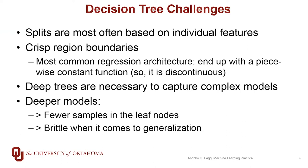If we want to capture very complex models, we need to have a very deep tree. What a deep tree means is that for an individual leaf node, we have very few samples that have fallen down into that leaf. That means we don't necessarily have a statistically significant amount of information to make good decisions about what the output ought to be. So our trees tend to be fairly brittle when asked to generalize to new scenarios.